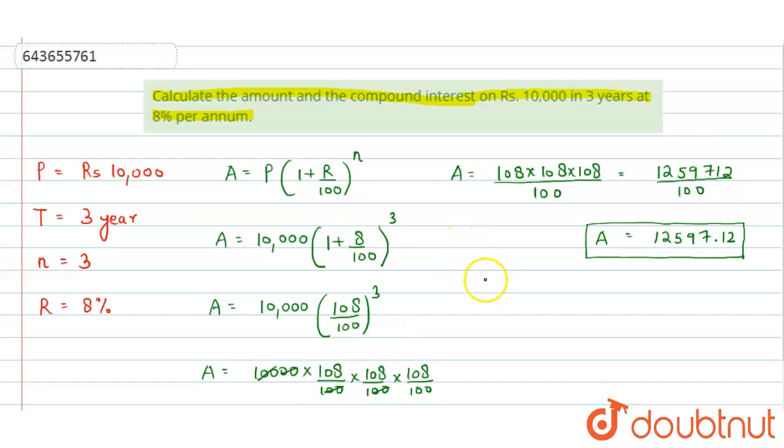Compound Interest = Amount - Principal = 12,597.12 - 10,000.